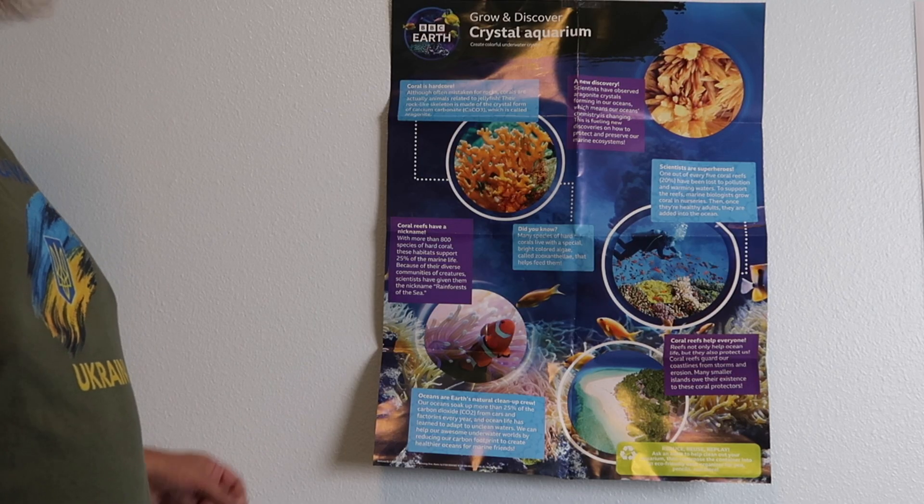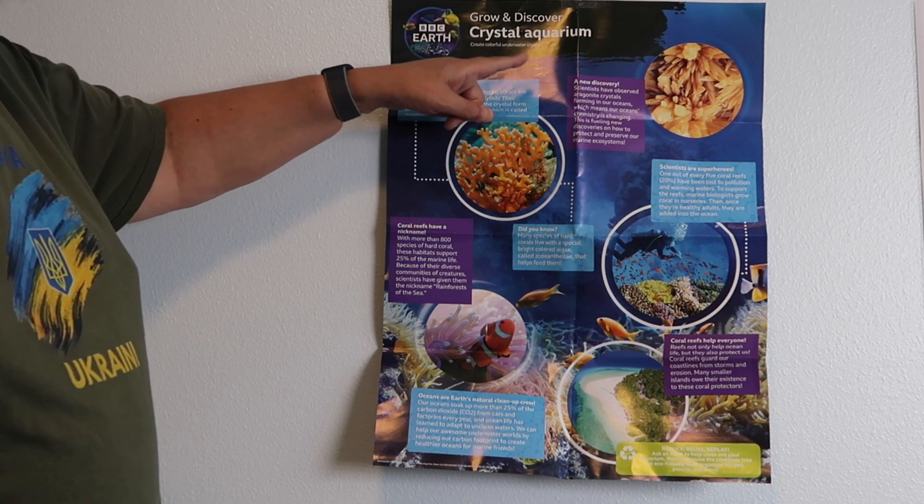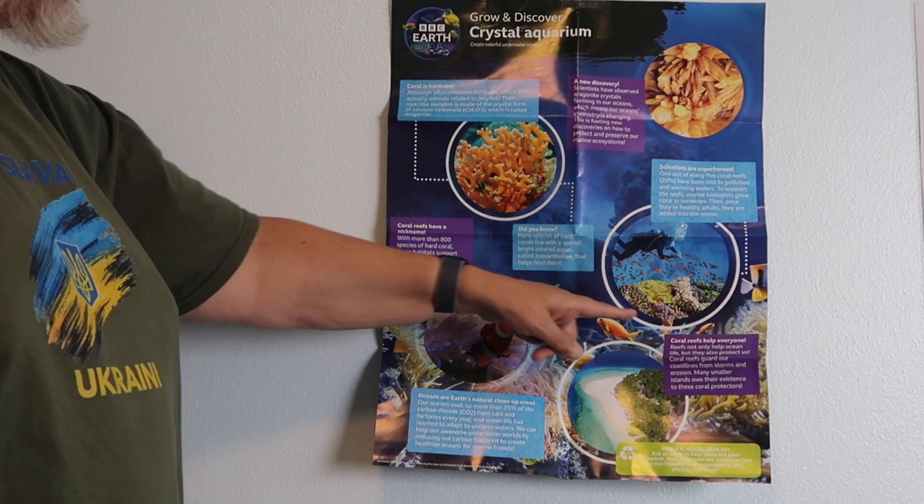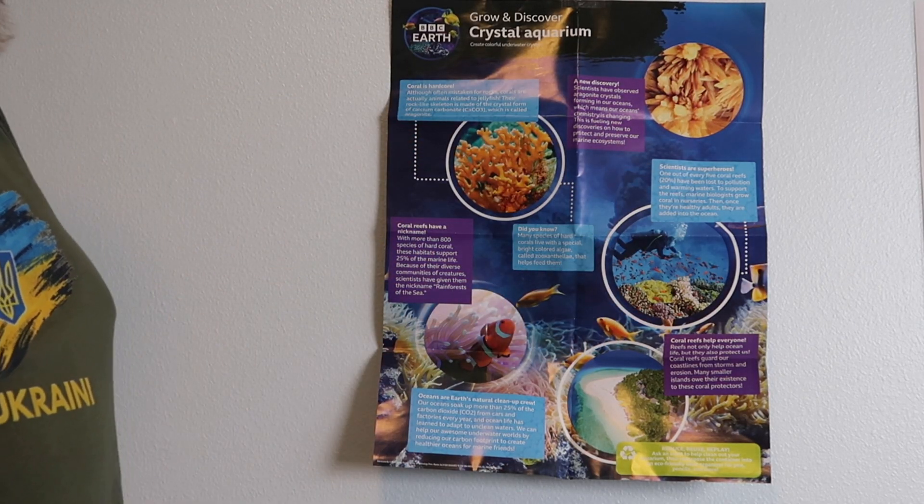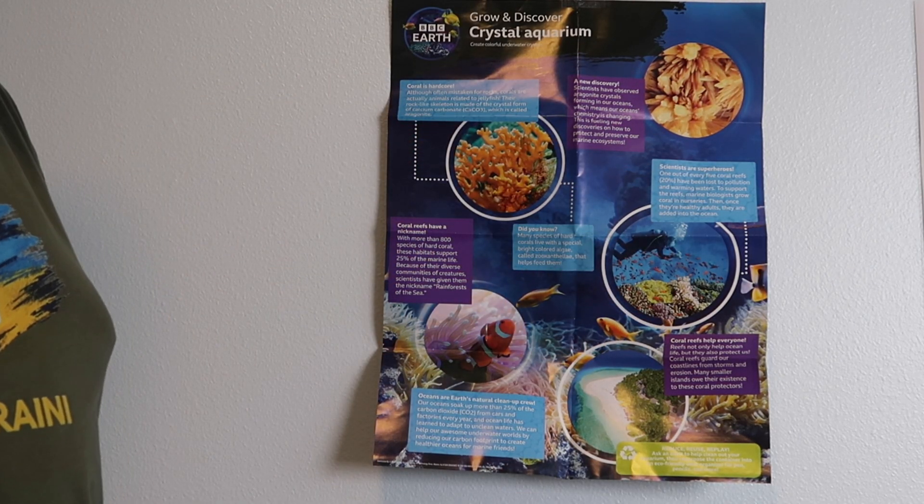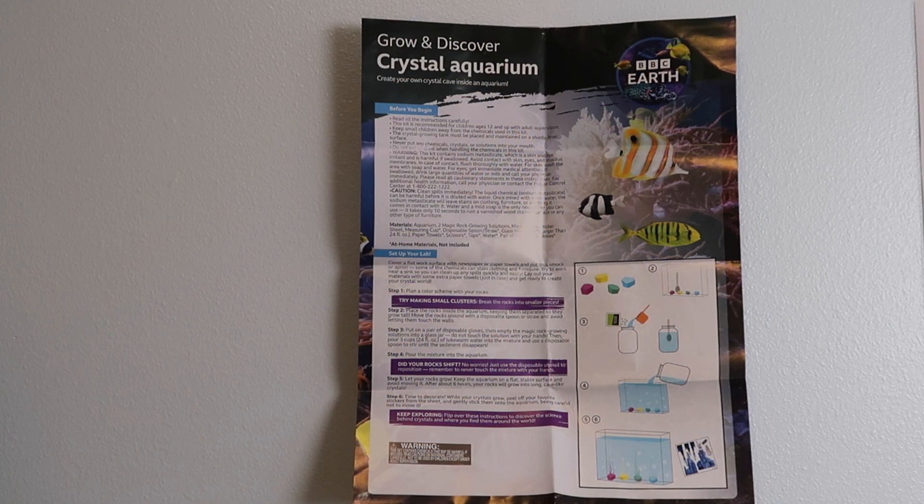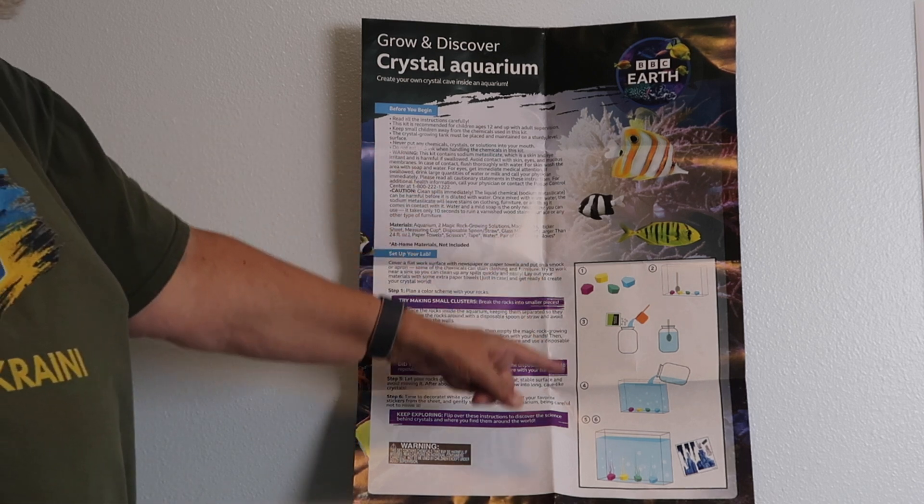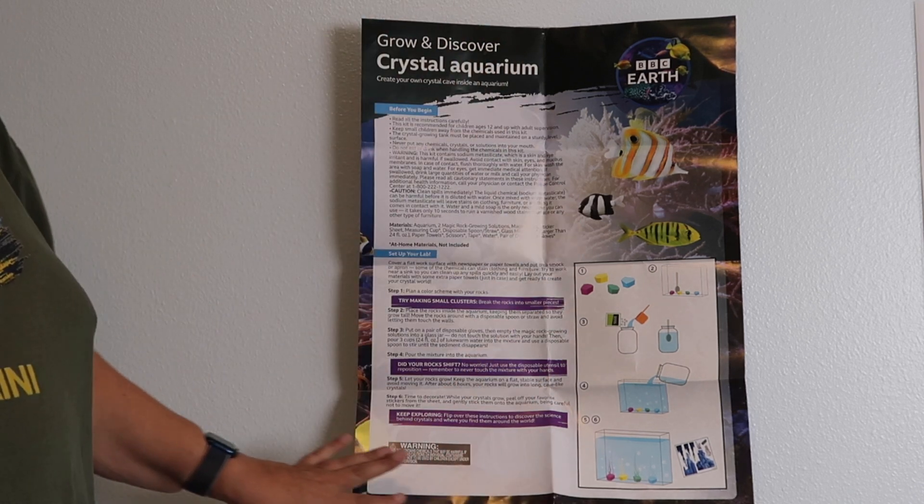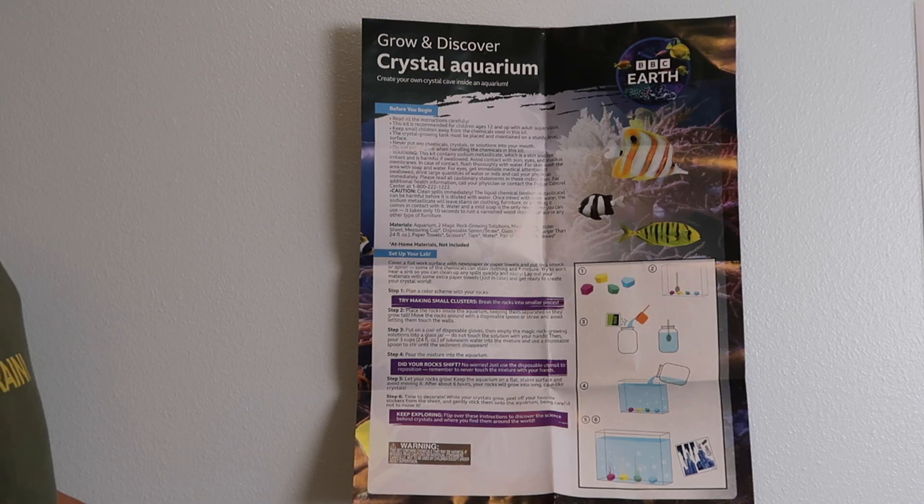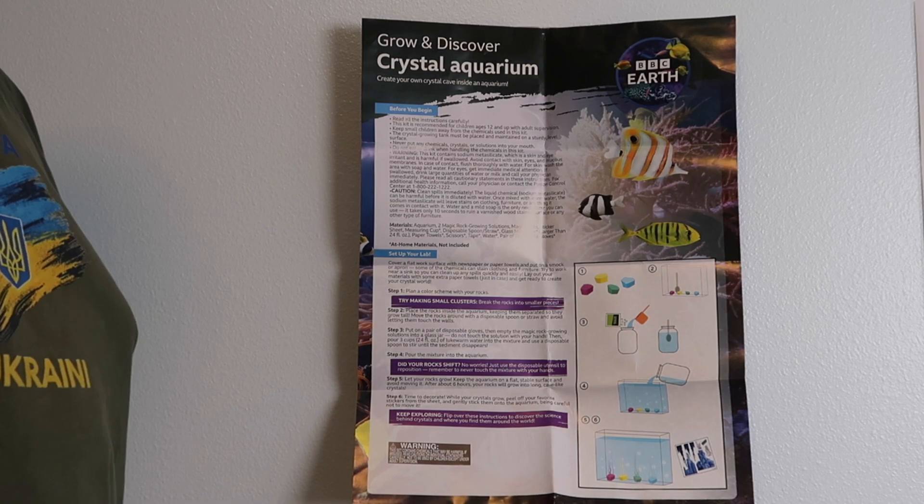It also comes with this poster that displays a little about oceans and coral reefs. Not much information there but it's pretty colorful for kids to hang on the wall. And on the other side are the instructions. That's it, one single page of instructions on the back of the poster. Let's go through that in a little bit more detail so that you can see that.